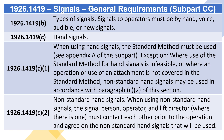1926.1419(C) — Hand Signals. 1926.1419(C)(1): When using hand signals, the standard method must be used. See Appendix A of this subpart. Exception: Where use of the standard method for hand signals is infeasible, or where an operation or use of an attachment is not covered in the standard method, non-standard hand signals may be used in accordance with paragraph (C)(2) of this section.